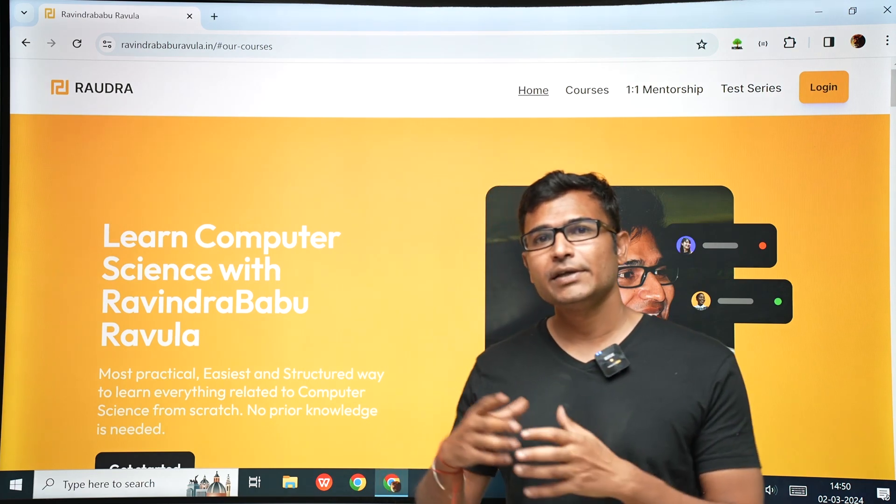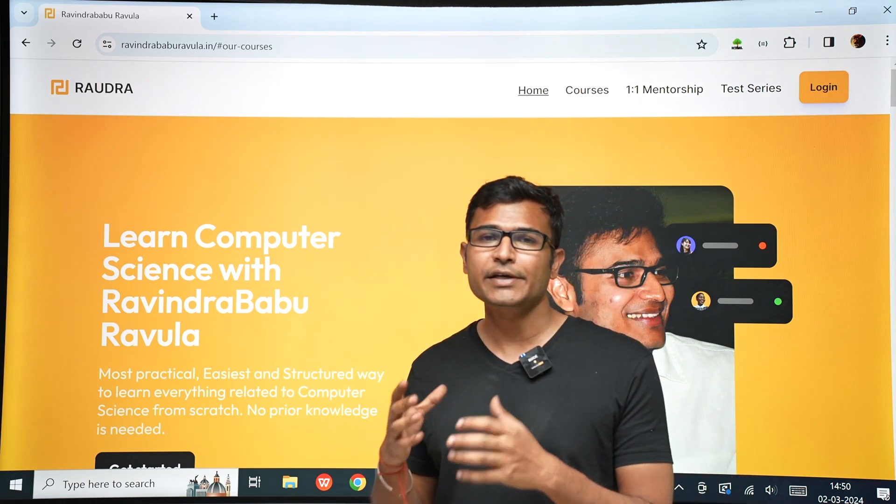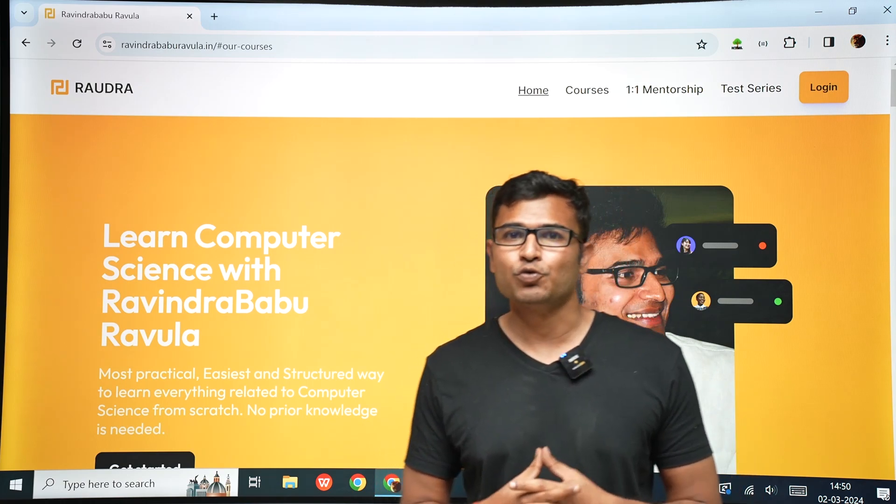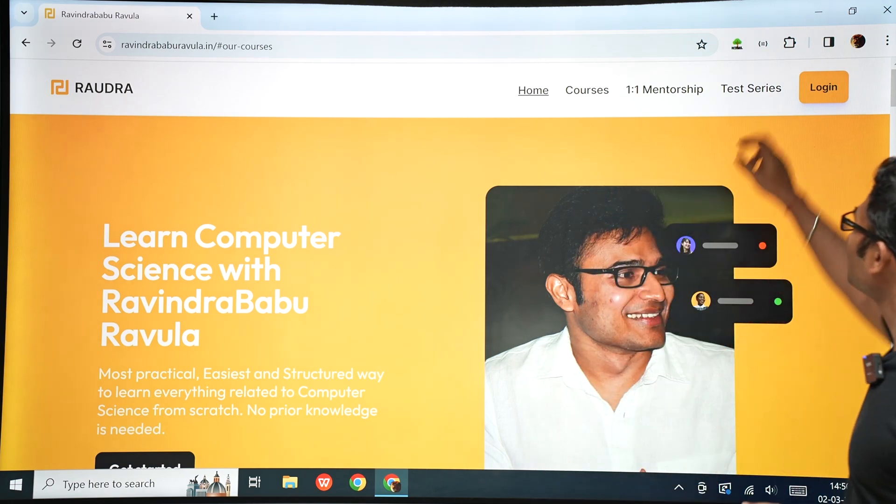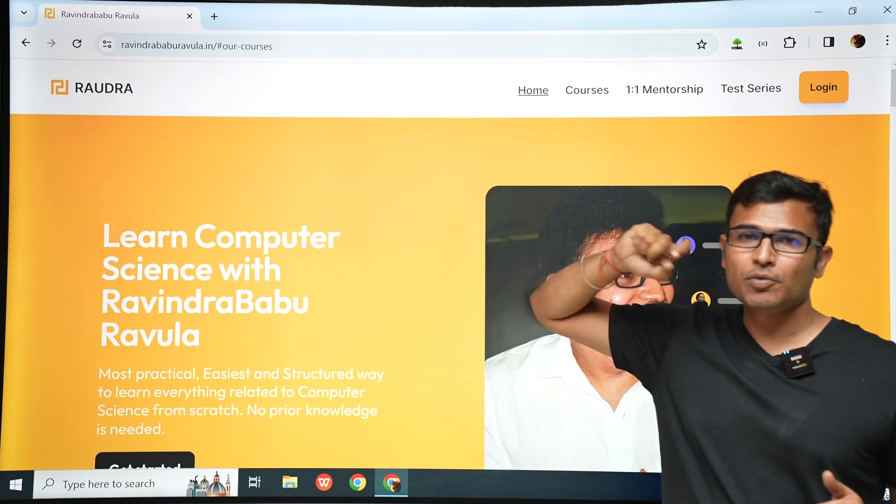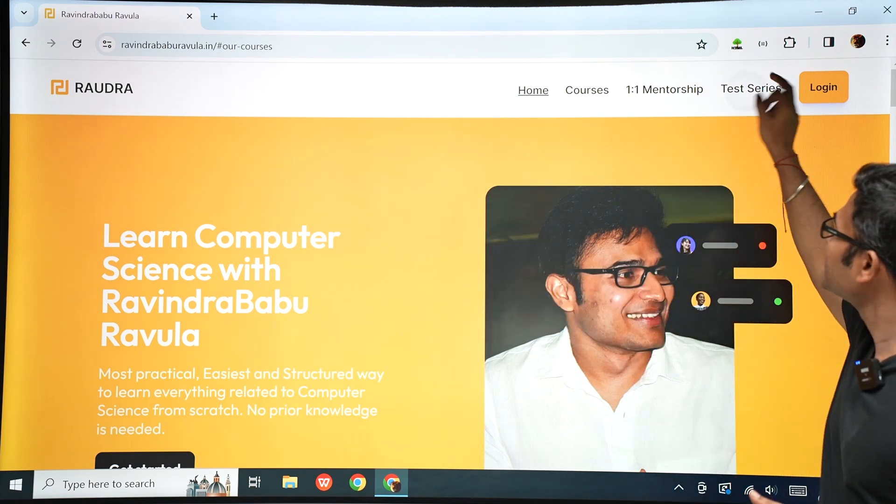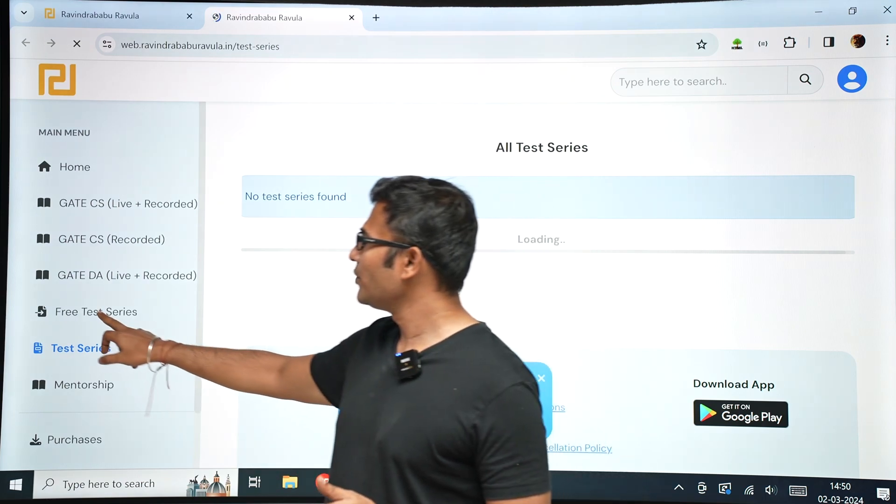If you get first rank in GATE CS, you are going to get 50,000 rupees. If you get first rank in GATE DA, you are going to get 50,000 rupees. Okay. And now how to write the test is, you go to test series on the website, ravindrababuravula.in. Go to ravindrababuravula.in and you go to test series.